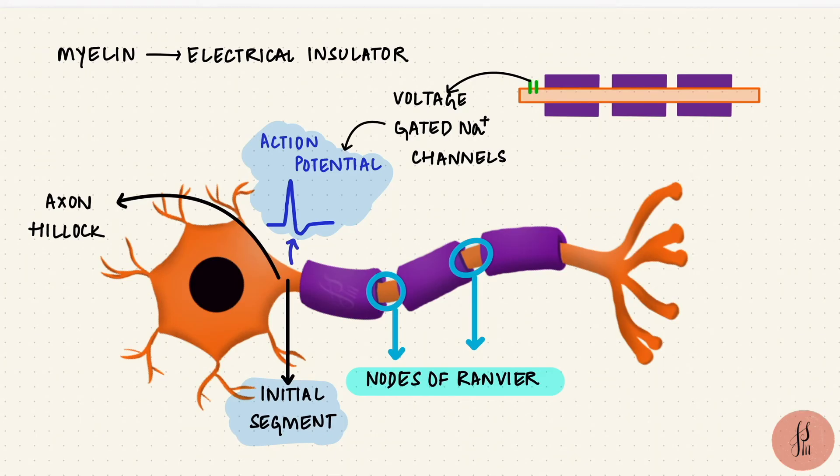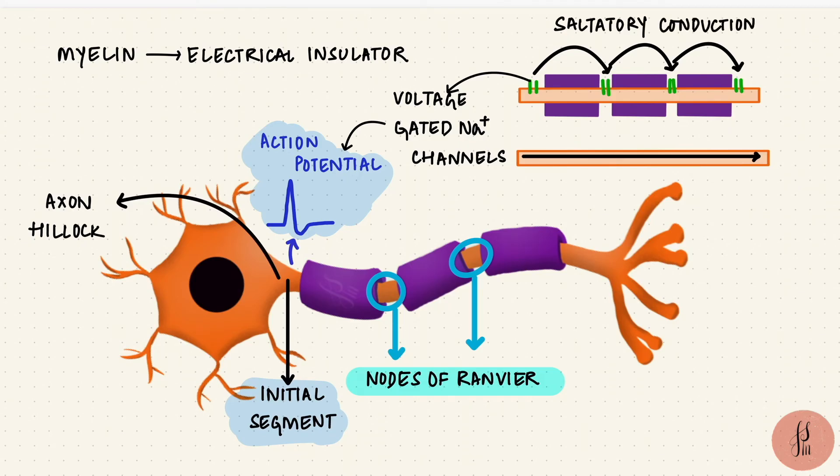So it starts here, and if there's no myelin, it'll get conducted in a continuous manner. But with myelin, since it's an insulator, the channels accumulate in the spaces that are unmyelinated, those nodes of Ranvier. So it travels by jumping from node to node. This is called saltatory conduction, and it increases the velocity of impulse conduction.